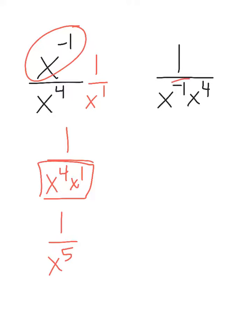So, looking at our second problem, we have x to the negative 1. That becomes 1 over x to the 1st. Now we have 1 over x to the 1st times x to the 4th.